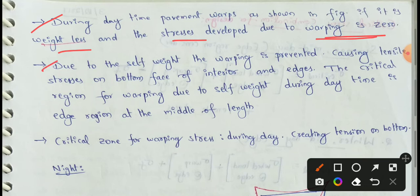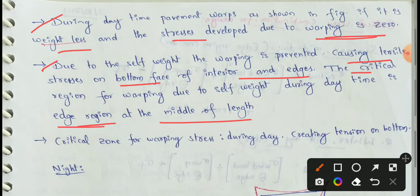Due to self-weight, warping is prevented, causing tensile stresses on the bottom face of the interior and edges. The bottom face will experience tensile stresses at the interior edge. The critical region for warping due to self-weight during day time is the edge region at the middle of the length.